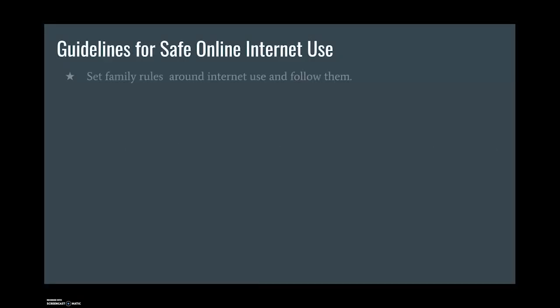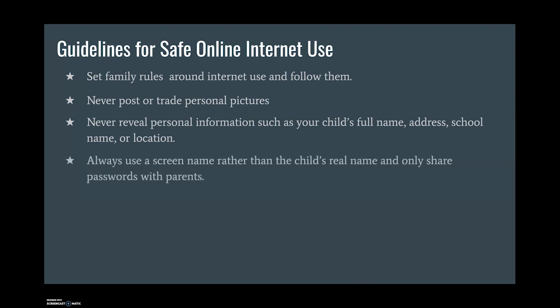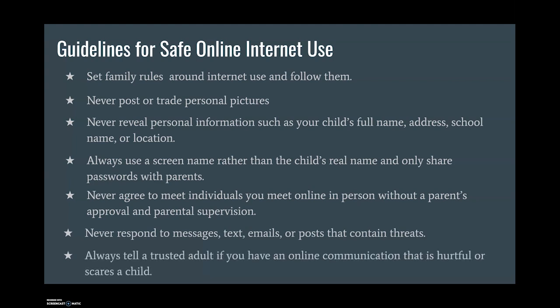Here are the basic guidelines that parents should share with their kids for safe online internet use. Set family rules around internet use and follow them. Never post or trade personal pictures. Never reveal personal information such as your child's full name, address, school name, or location. Always use a screen name rather than the child's real name and only share passwords with parents. Never agree to meet individuals you meet online in person without a parent's approval and parental supervision. Never respond to messages, texts, emails, or posts that contain threats. Always tell a trusted adult if you have an online communication that is hurtful or scary.